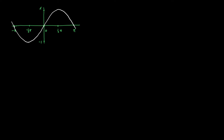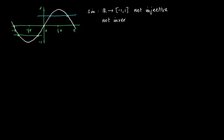Now consider the graph of the sine of phi. We clearly see that this function, the sine of phi from R to [-1, 1], is not an injective function. You just need to perform the horizontal line test to confirm this: the horizontal line test gives you, for certain values, two distinct originals. So this function is not invertible — the sine defined on R has no inverse.